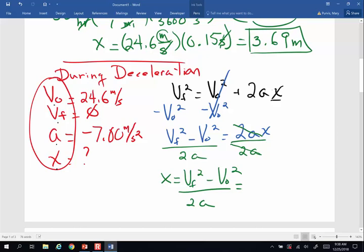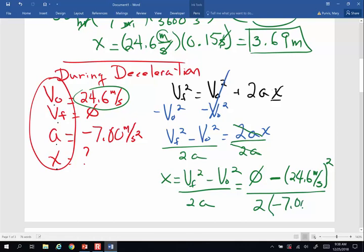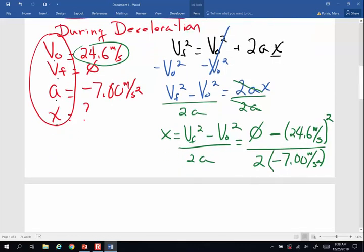Now I put my numbers in. Final velocity is 0. So final velocity is 0 minus original velocity, 24.6 meters per second quantity squared. And for this problem, this negative sign is outside the square. So when you square the number, you do not eliminate that negative. 2 times the rate of deceleration minus 7 meters per second squared. So I'm going to pick up my calculator. And let's see what I get. 24.6 squared divided by 14. And I end up with a displacement of 43.2 meters.